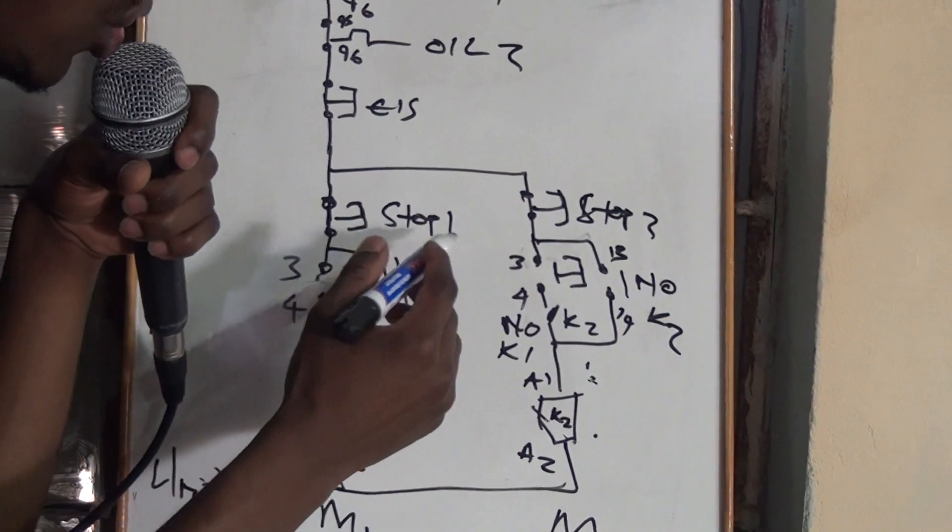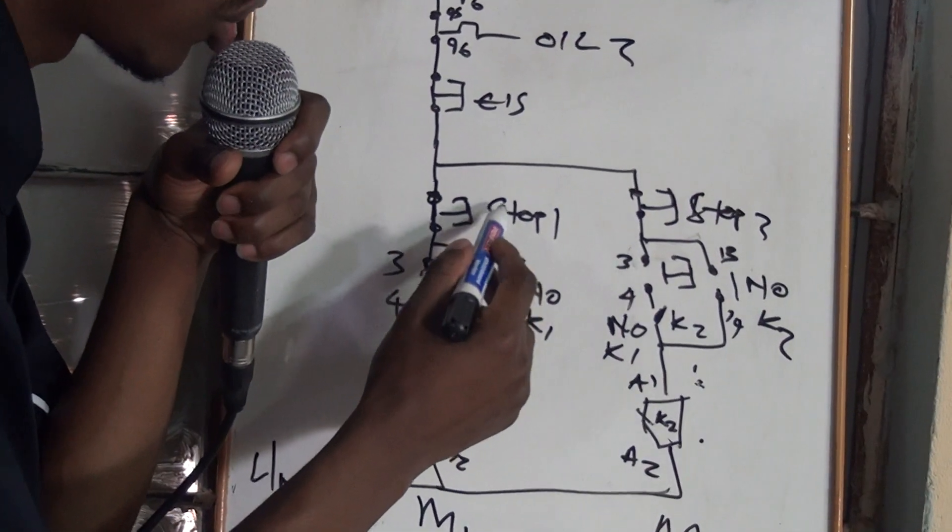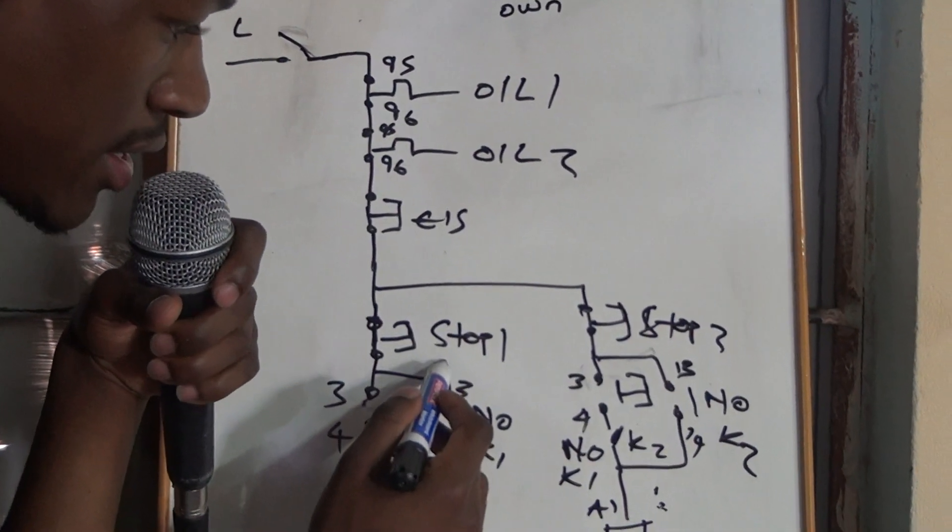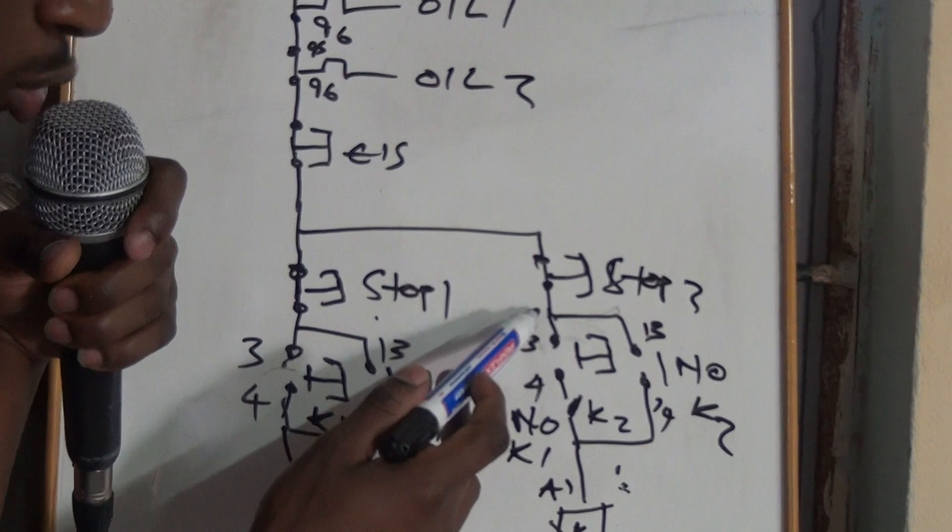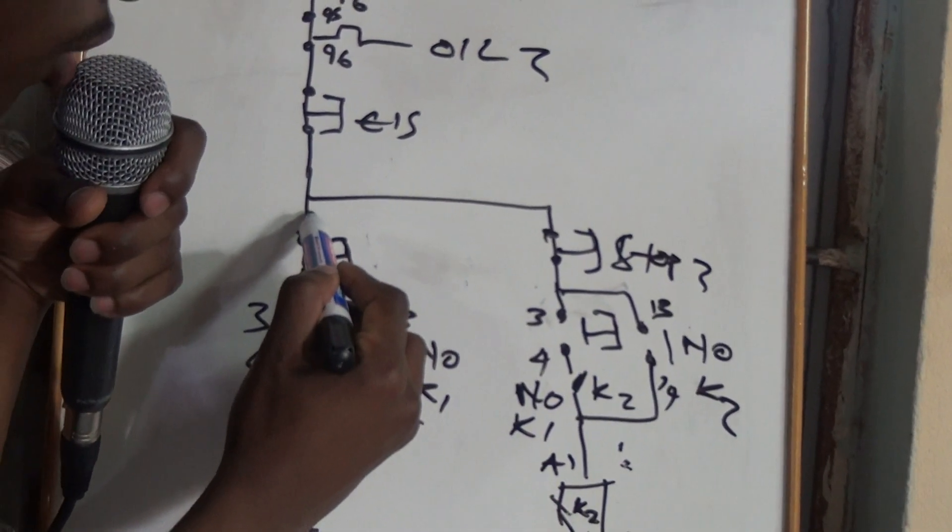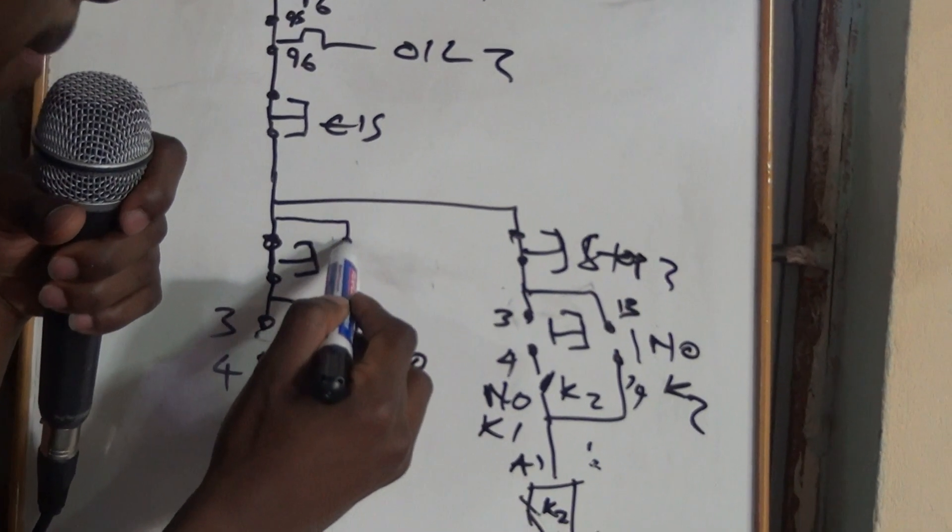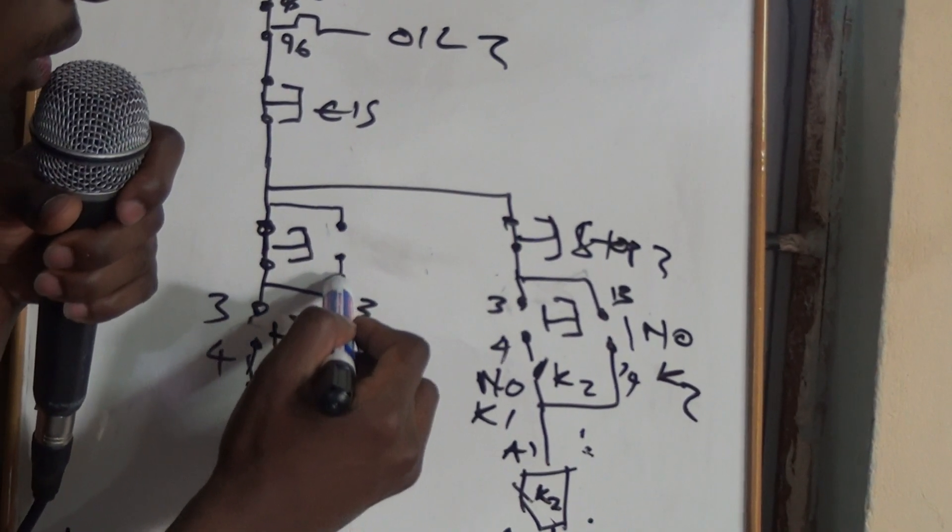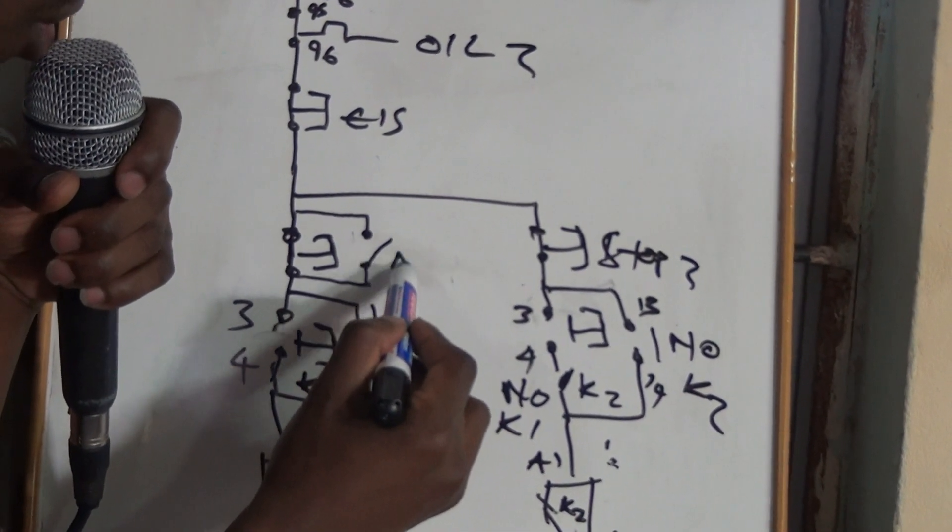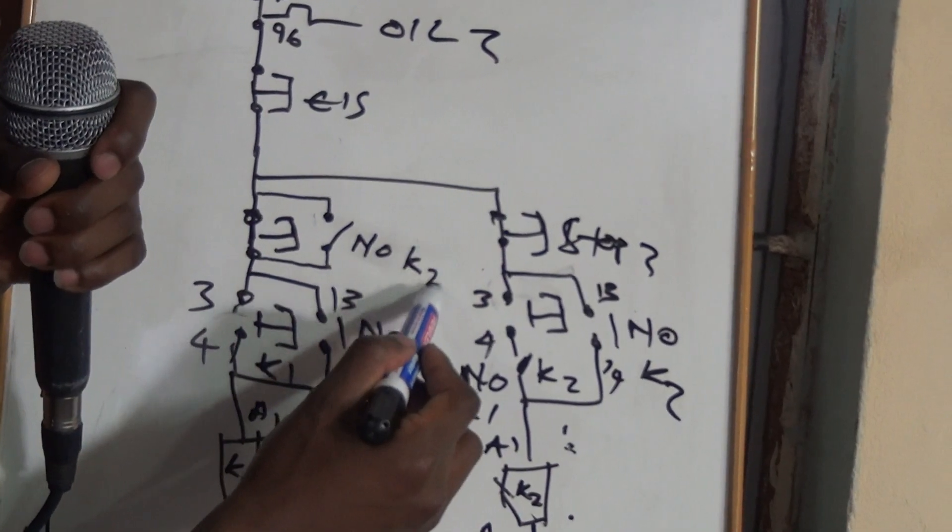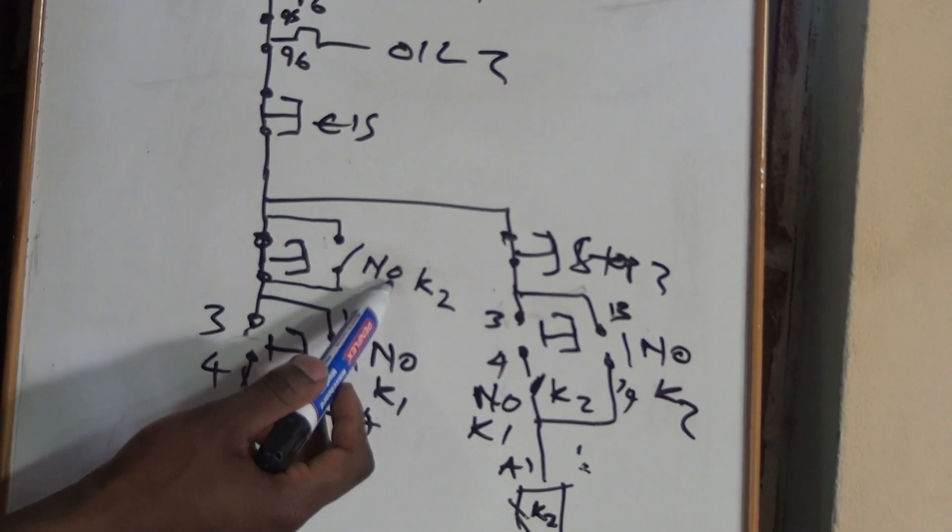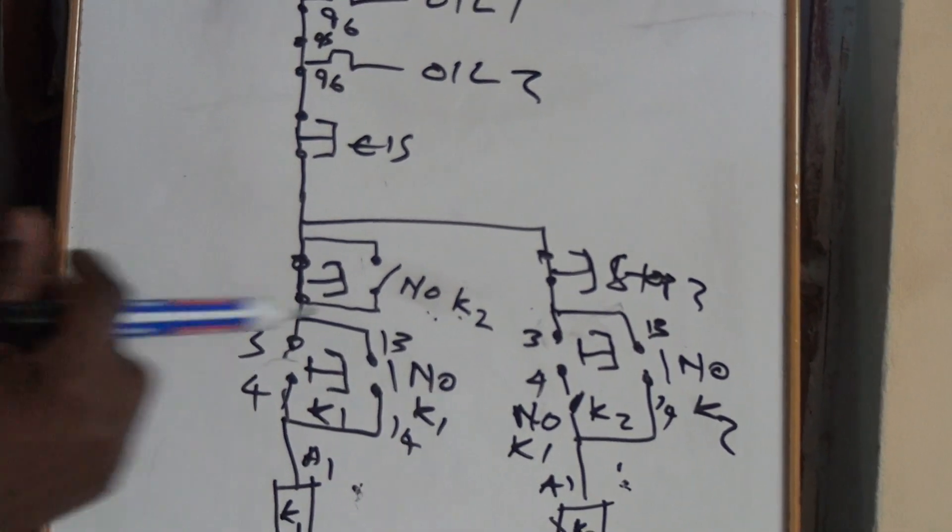So that Motor 2 starts after you have started Motor 1, but now, for us to be able to stop Motor 1, we have to stop Motor 2 first, and then we'll do that by including or putting a normally open of K2 on the stop button, so on the stop button we are putting a normally open of K2, so this is what will happen.